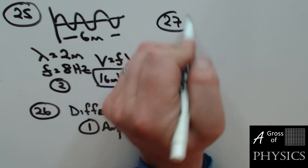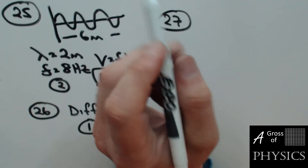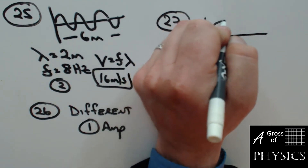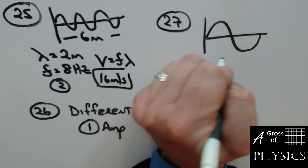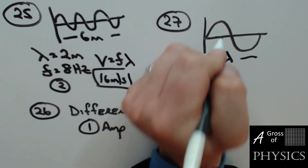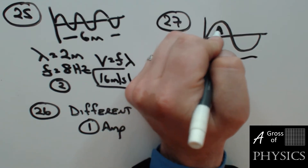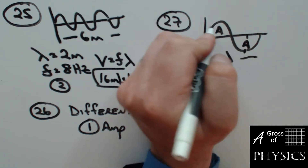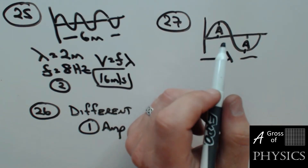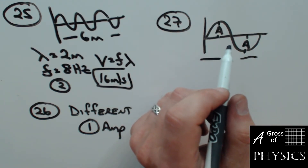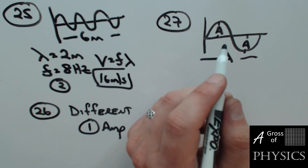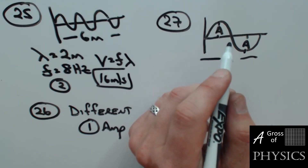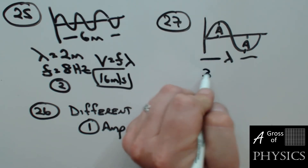Number 27: which diagram has amplitude and wavelength labeled correctly? Wavelength spans one full cycle, and amplitude is the height from rest to crest, or rest to trough. Looking at the choices: one does not show it correctly, two does not, three does, four does not. So it's choice three.